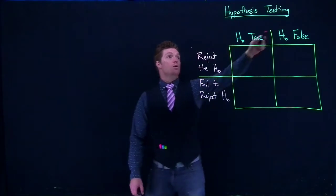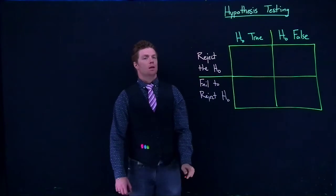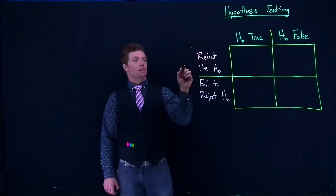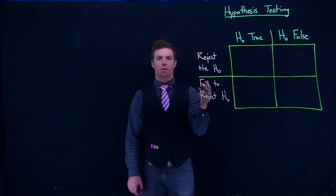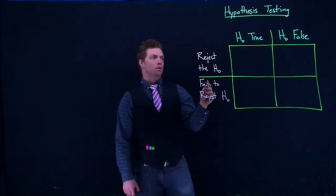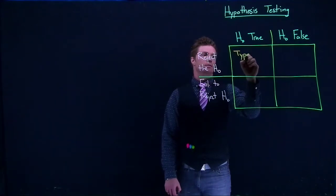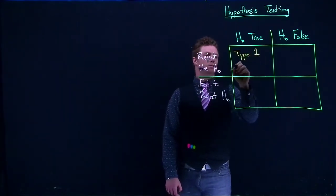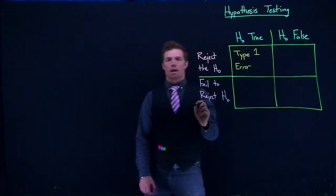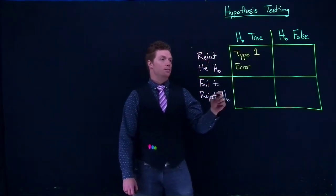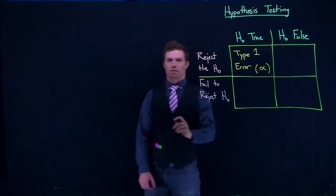We only know the decision we make. Now let's say that we reject the null hypothesis, but the null hypothesis is actually correct. If that happens, we make what is known as a Type 1 error.